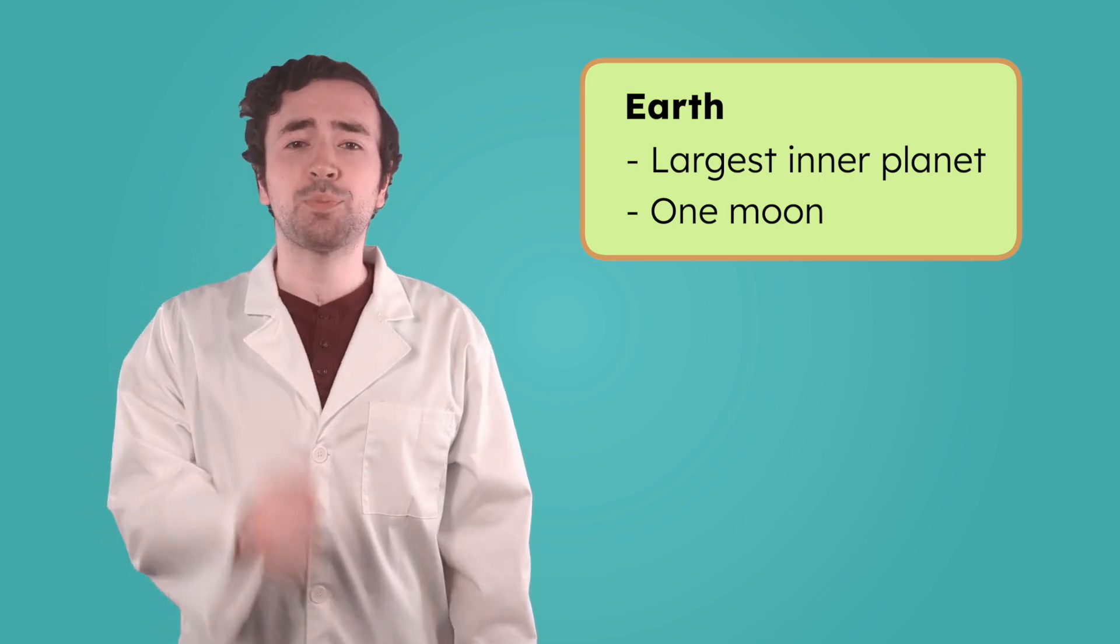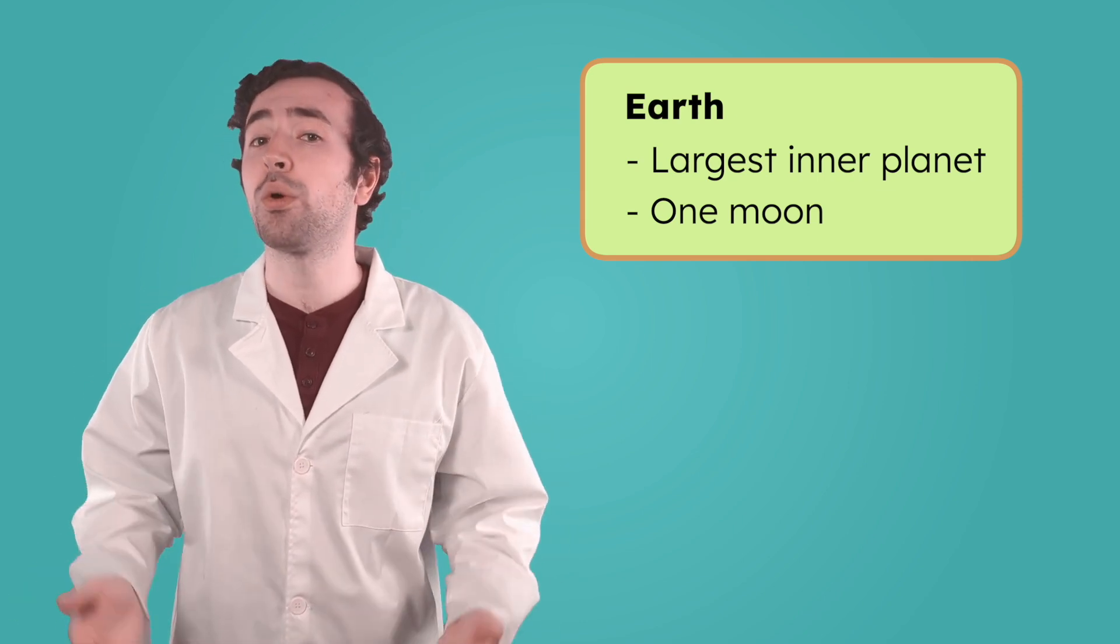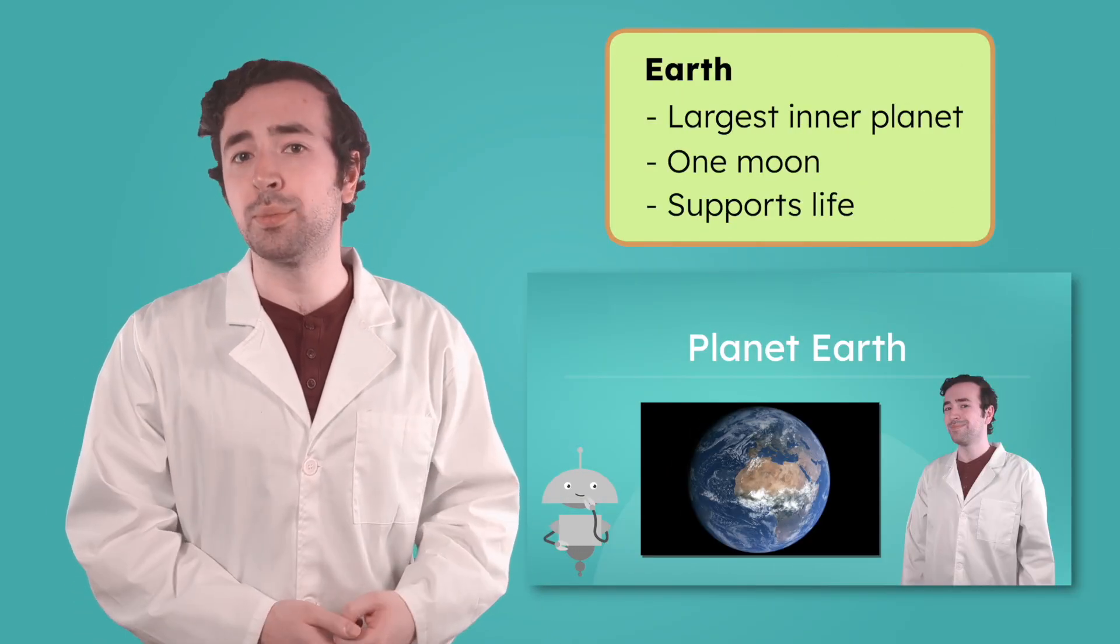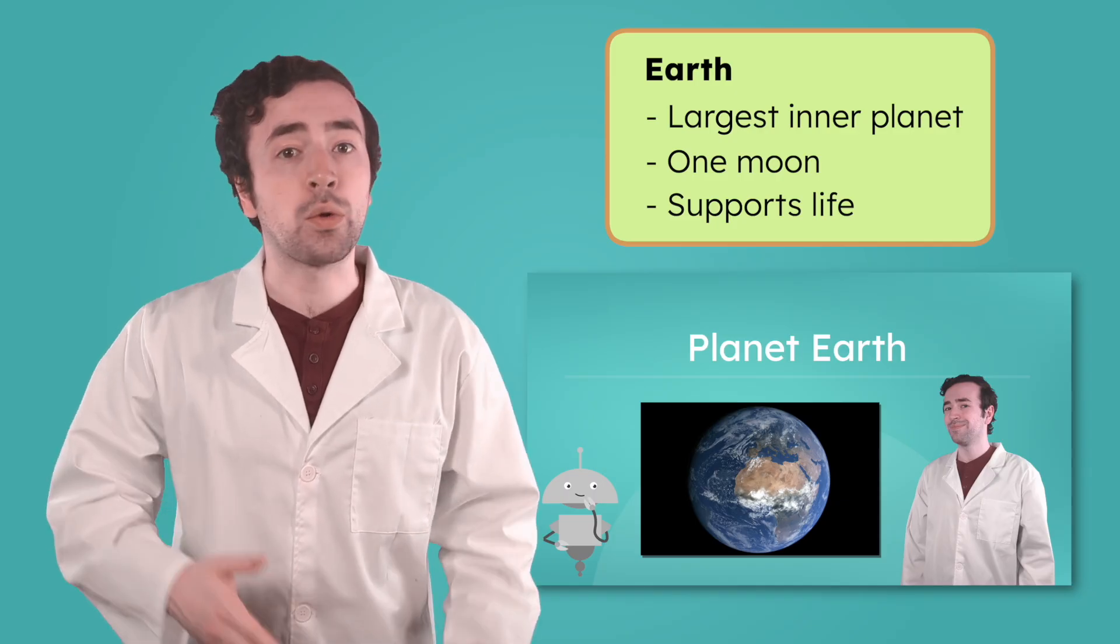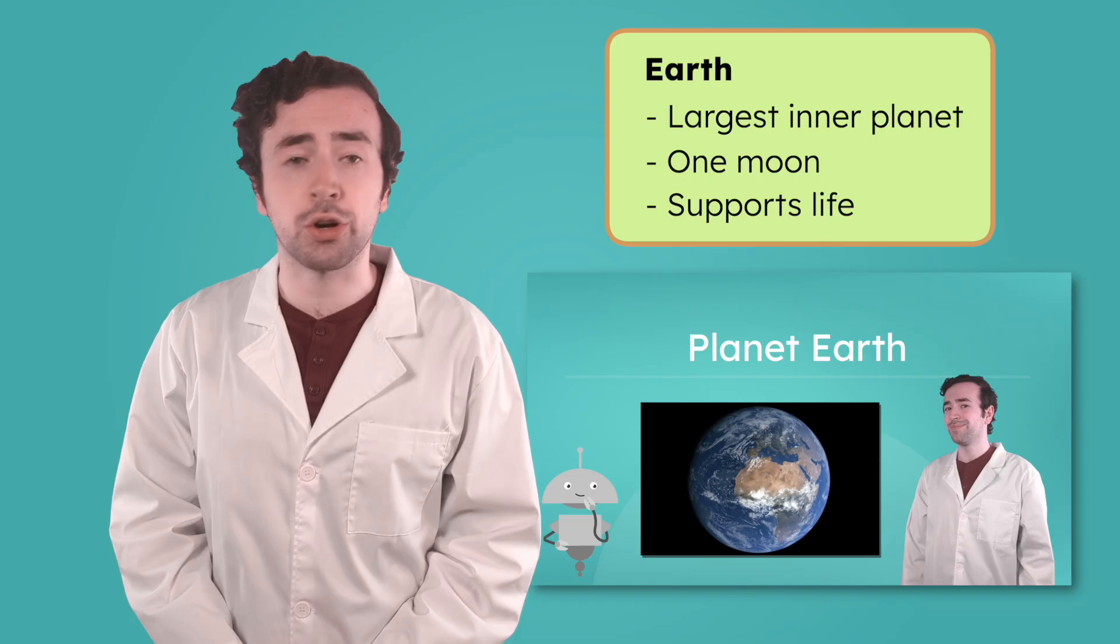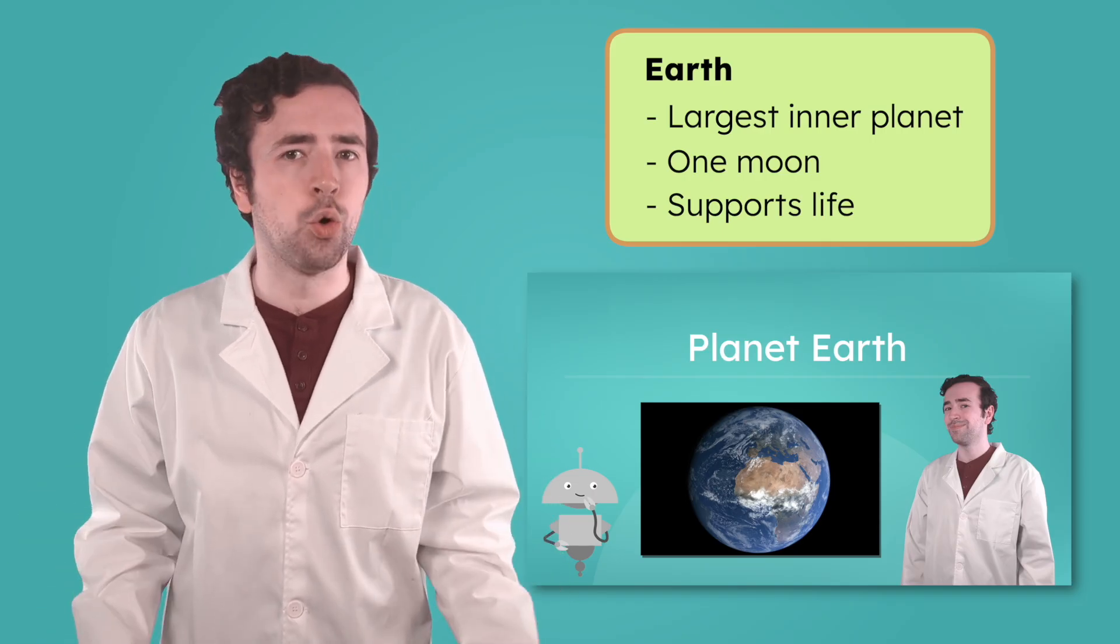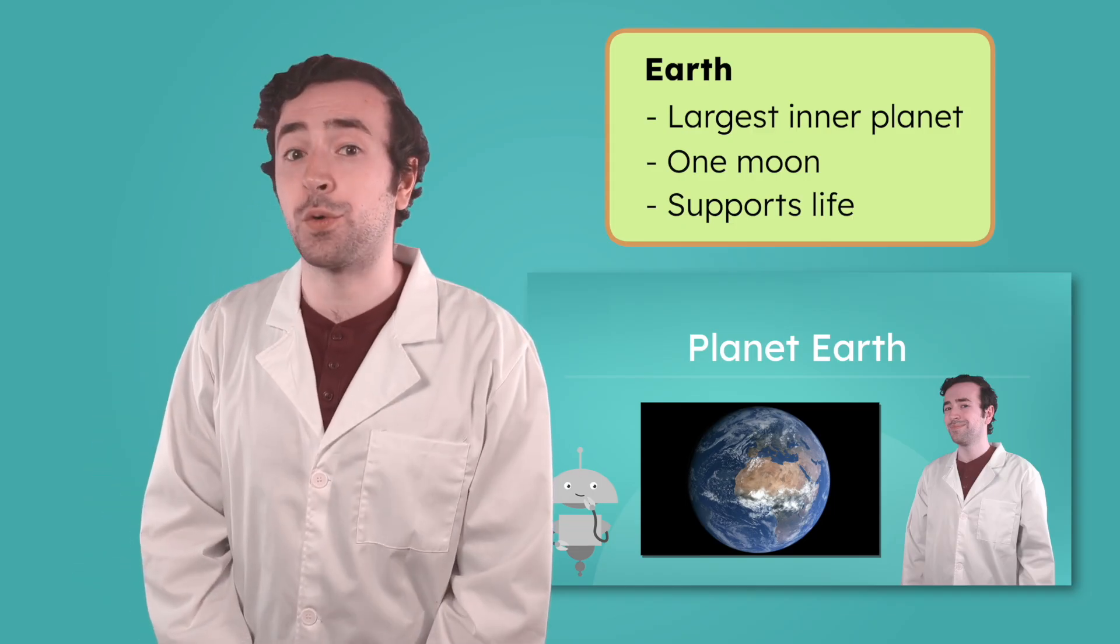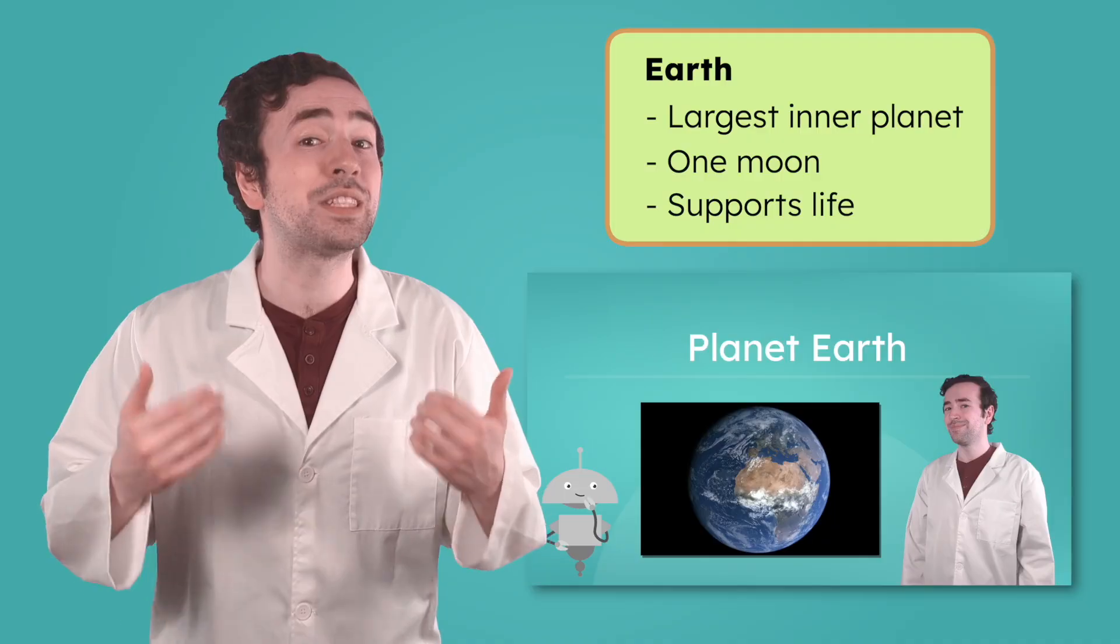But what makes Earth especially unique is that it's the only planet we know of that can support life. We learned in our last unit that Earth is a habitable planet, which means it has the right conditions for living things to survive. Earth's atmosphere allows us to breathe and maintain a comfortable temperature, unlike Mercury with its huge shifts between hot and cold, and Venus with its blazing heat. Earth's temperature also allows for water to exist in its liquid form, something that life depends on.